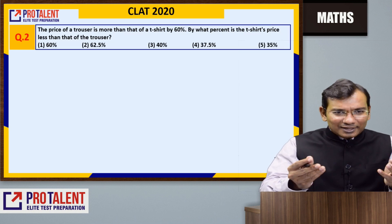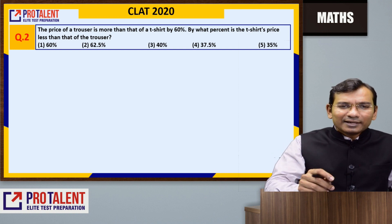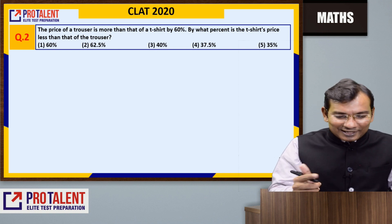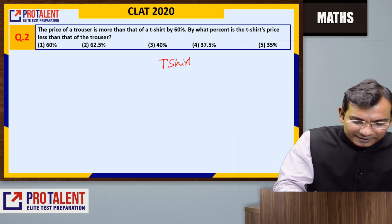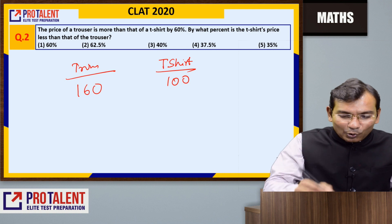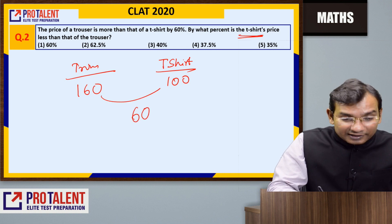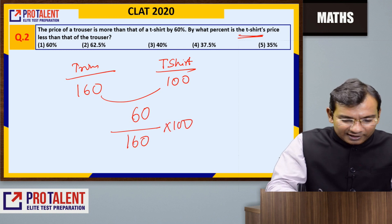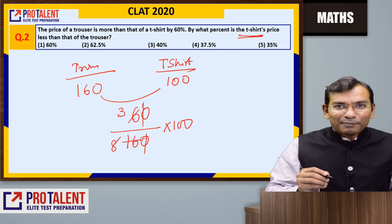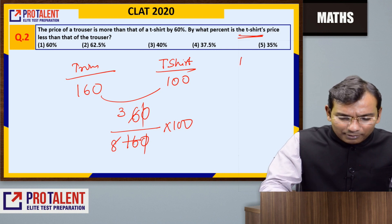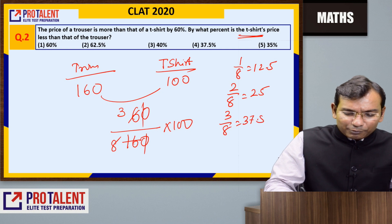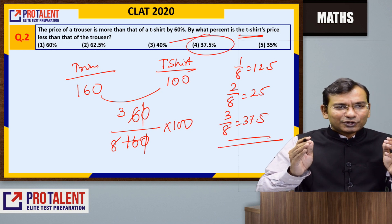Next question, done in less than a minute. The price of a trouser is more than that of a T-shirt by 60%. By what percent is the T-shirt's price less than the trouser's price? The trouser's price is 160. So the T-shirt is less by 60 upon 160 into 100, which is 3 by 8. Since 1 by 8 is 12.5%, 3 by 8 is 37.5%. Answer is 37.5%. Easy one.